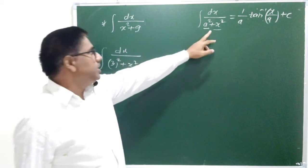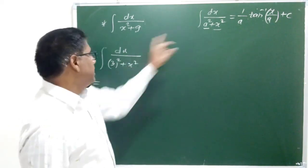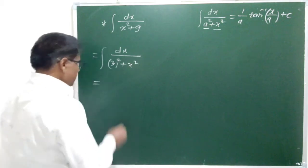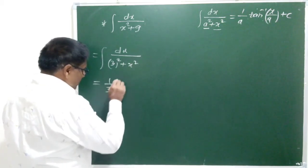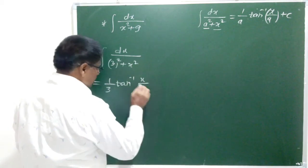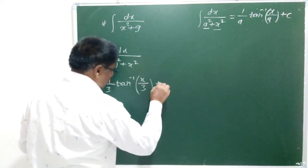Now, we can apply this formula. Value of a here is 3, value of x is x. Therefore, it is 1 by a tan inverse x by a that is 3, x by 3 plus c.